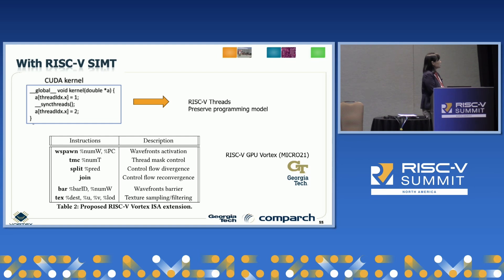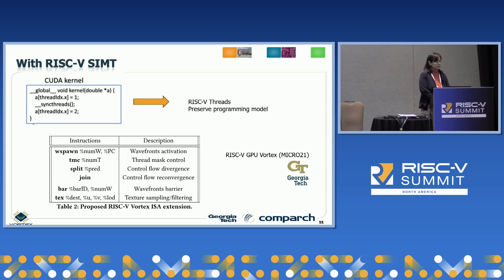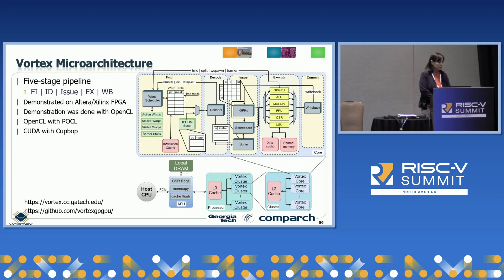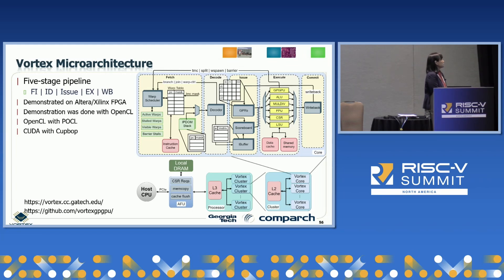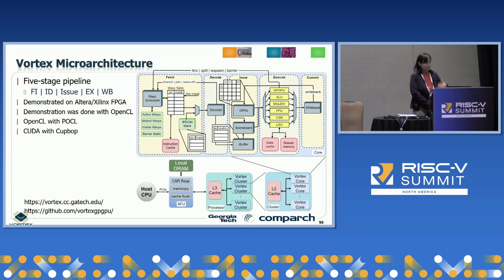When we map CUDA kernels to our RISC-V SIMT architecture, each thread is simply mapped to a RISC-V thread. There's no need for loop thread coalescing because the RISC-V GPU by nature supports many threads. The Vortex architecture is our open-source version, available at the link on this slide, demonstrated in RTL and on FPGAs as well. The demonstration was done with OpenCL, and we are working on CUDA support via CUP-UP. We have a working CUDA version, but the CUP-UP for Vortex is still in a private repo as Vortex keeps evolving.